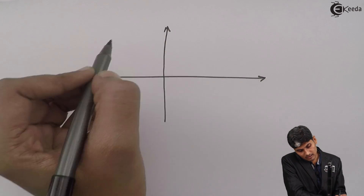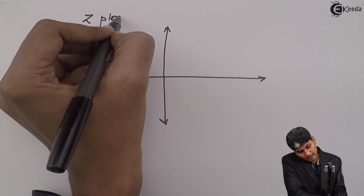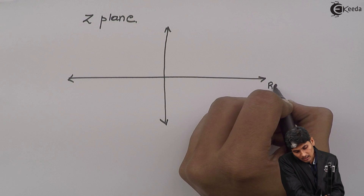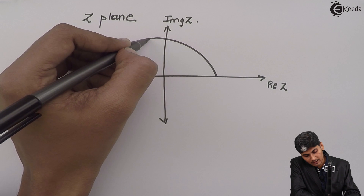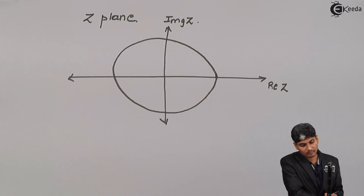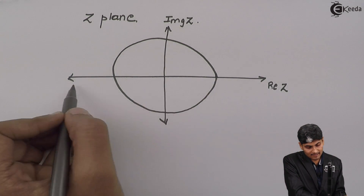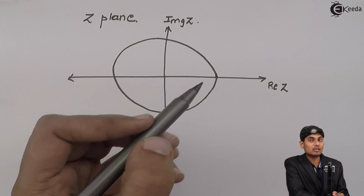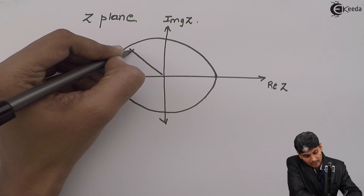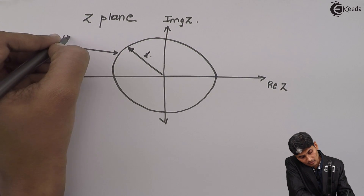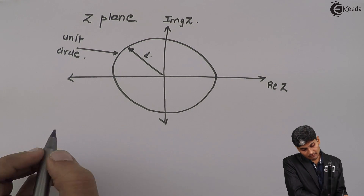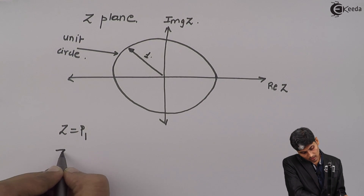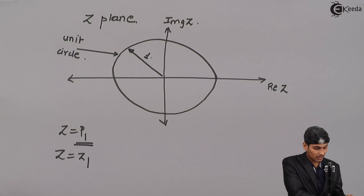How to graphically plot this? This is our z-plane, in which we have a real part of z and an imaginary part of z, and in z-transform everything is on a circle. A very important circle in the z-plane is called the unit circle, because the radius of that circle is 1. Whenever I want to represent z equal to p1, I will use a cross mark.